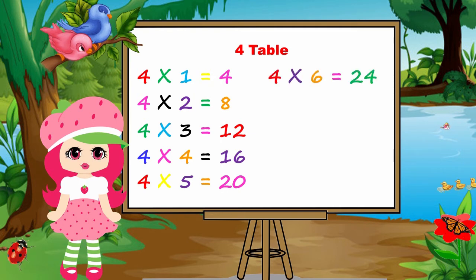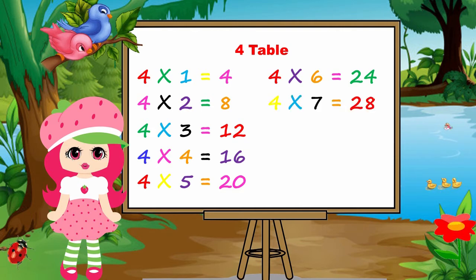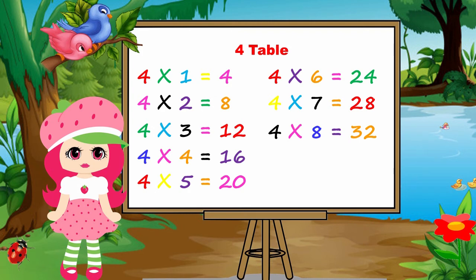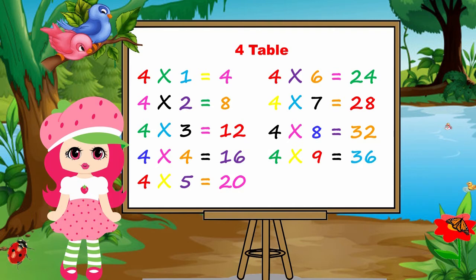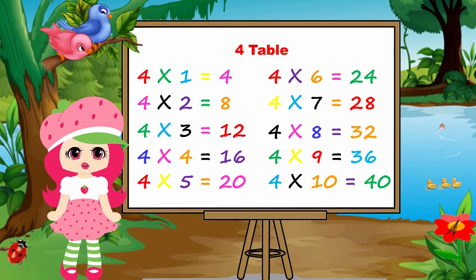Four sixes are twenty-four. Four sevens are twenty-eight. Four eights are thirty-two. Four nines are thirty-six. Four tens are forty.